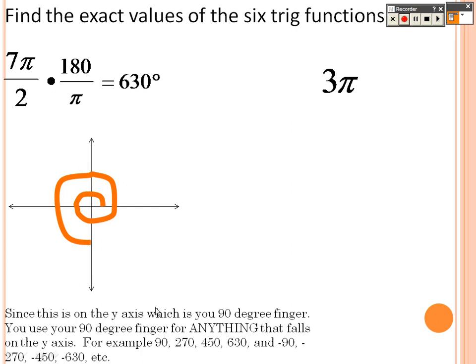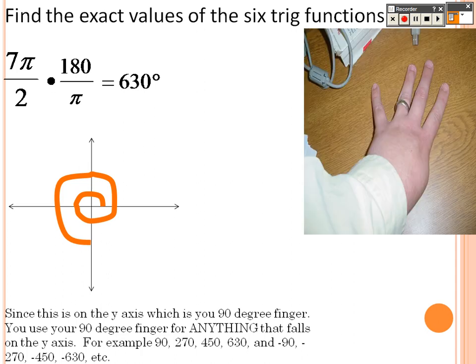Personally, it's easier to look at it on the axis. Using terminal points, that point on the unit circle is (0, negative 1). So sine is negative 1, cosine is 0 because it's x. Tangent is y over x, which is negative 1 over 0 — undefined. Then you just flip everything to find the reciprocals.